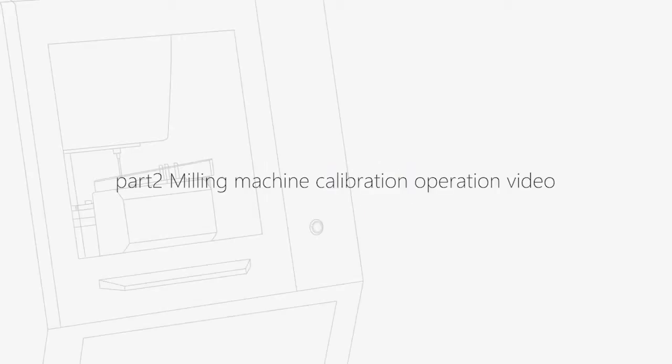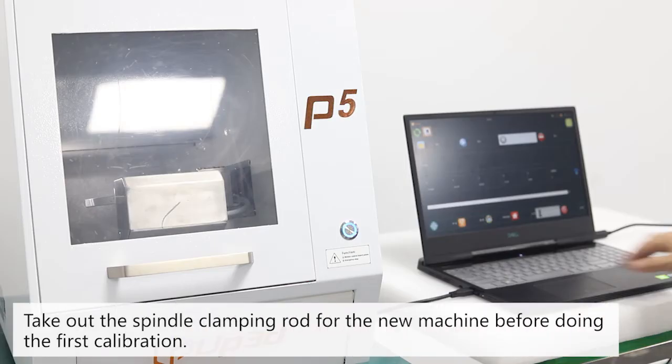Part 2: Miele Machine calibration operation video. Take out the spindle clamping rod for the new machine before the first calibration.